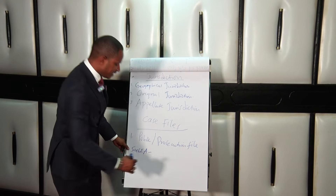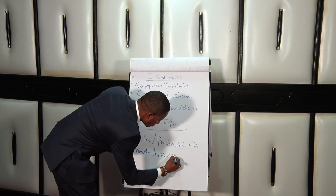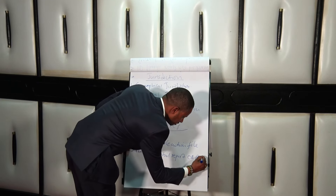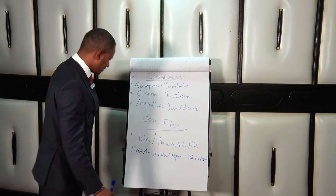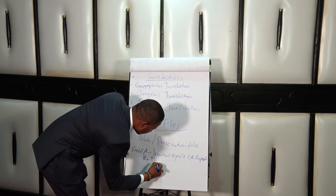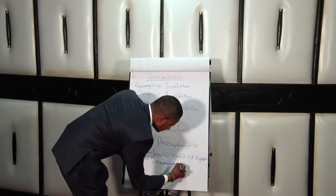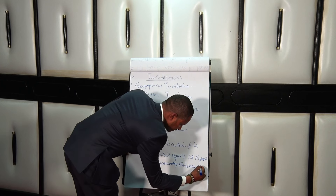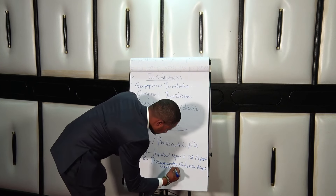This file has sub-files. In sub-file A, there is the initial report, which is the OB report. You must master this — do not cram, master it. Then sub-file B contains documentary evidence. This contains maps and details of the scene — what happened at the scene of crime.